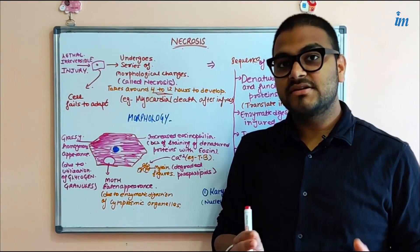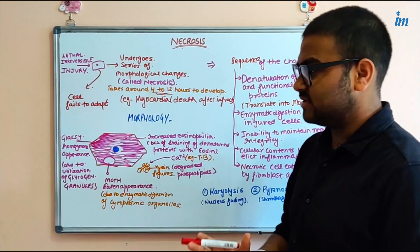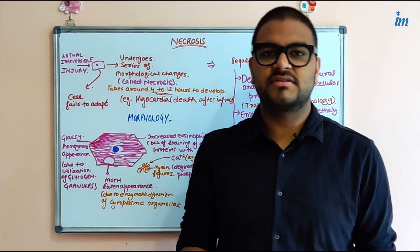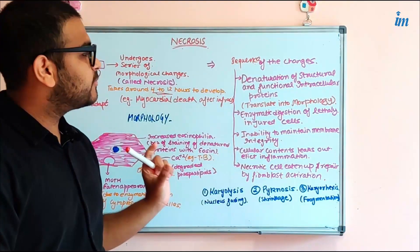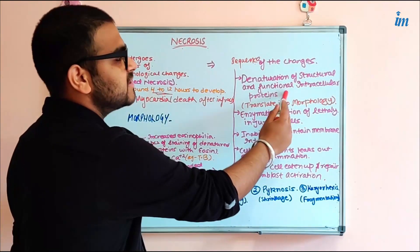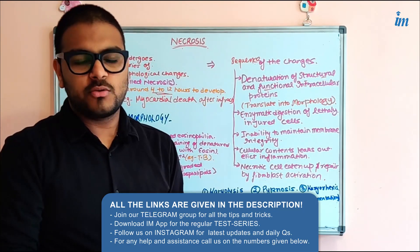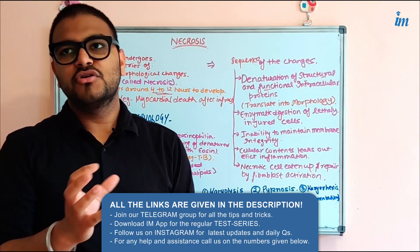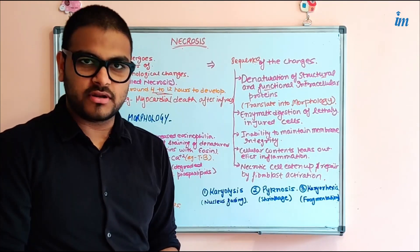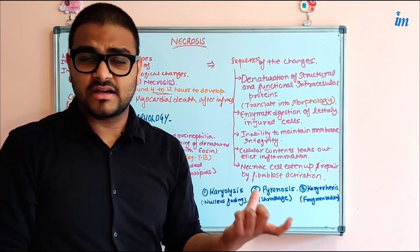Now let's look at the sequence — what is happening with the cell during necrosis. Necrosis involves denaturation of structural and functional intracellular proteins. Most of the cell's structures consist of proteins — various enzymes working in the cell and various structural components. So denaturation of those components occurs, whether they are functional enzymes present in the cell or structural proteins.